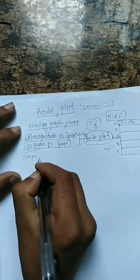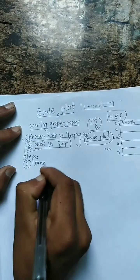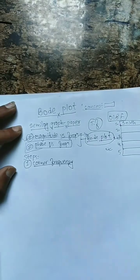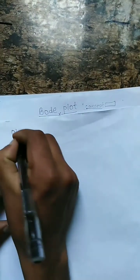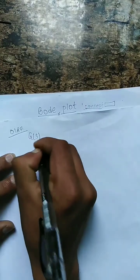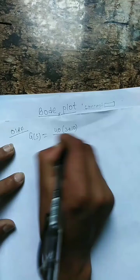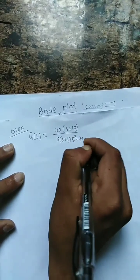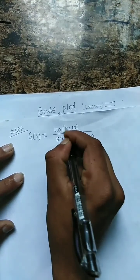The steps required: first, we need to find the corner frequencies. For the 2018 fall question, we are given G(s) = 40(s + 10) / [s(s + 1)(s² + 7s + 16)].